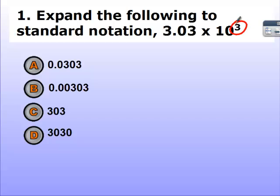So we do have a positive exponent, which means 3.03 times 10 times 10 times 10 should give us a number larger than 1, and that would be D, 1, 2, 3. And that concludes this video.